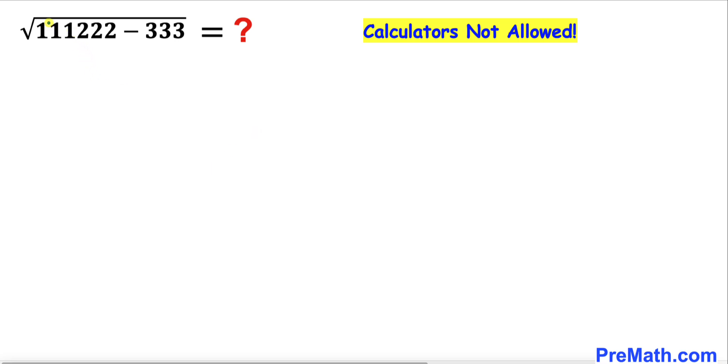Let's get started with the solution. Here's the very first step. Let's focus on this radicand. I have copied it down. Now let's manipulate this part. This could be written as 111000 + 222 - 333. Now let's combine these two last terms, which gives us -111.